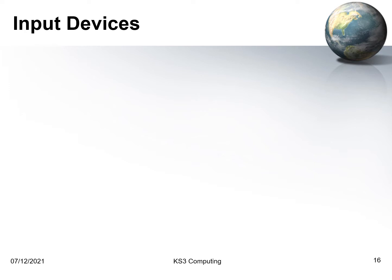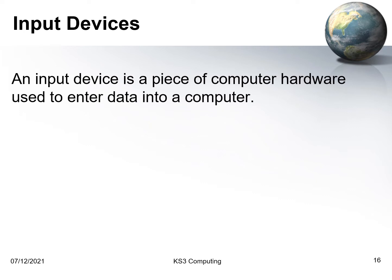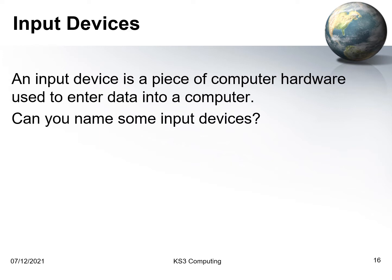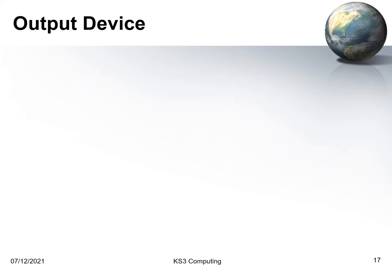All computer systems need to have at least one input device — something that allows you to enter data into the computer ready for processing. On many computers you'll enter text by typing on a keyboard. You might give direction information using a trackpad on a laptop, or you might have devices that can do both input and output, like the touchscreen on your smartphone.